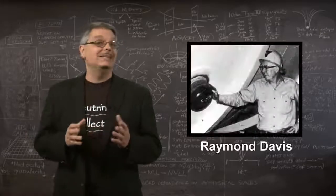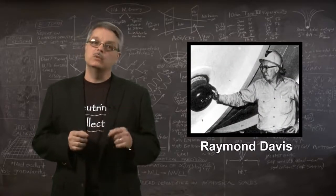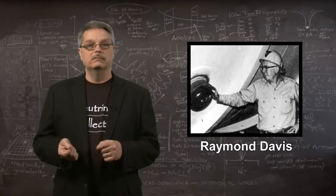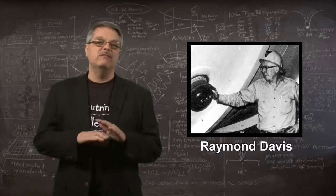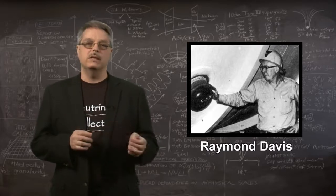Raymond Davis was a chemist by trade. He knew that neutrinos could interact with chlorine and make argon. He also knew that neutrinos interact very weakly and he'd need a huge number of chlorine atoms to make it work.